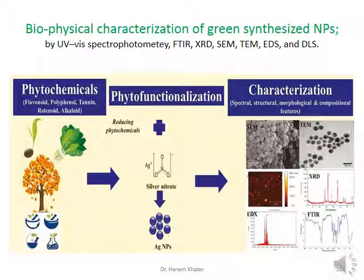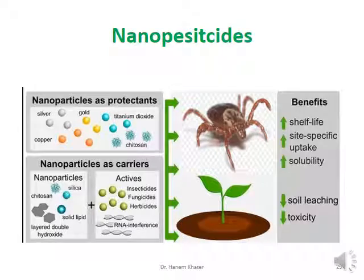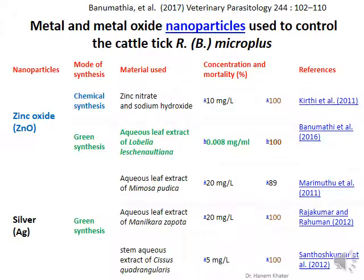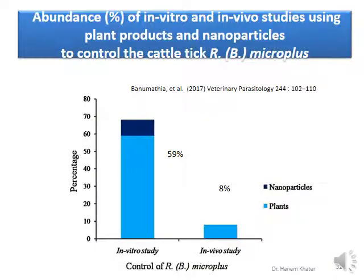Before application, the biophysical characterization of green synthesized nanoparticles should be determined. Nanopesticides could be used for tick control as protectants or carriers to increase solubility, shelf life, and site-specific uptake. They also decrease toxicity and soil leaching. These are some examples of metal and metal oxide nanoparticles used to control Rhipicephalus, Boophilus, and Amblyomma. This figure shows the abundance percent of in vitro and in vivo studies using plant products and nanoparticles to control ticks.